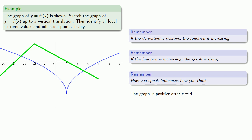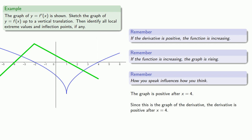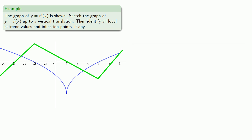In this last segment the graph is positive, and again since this is a graph of the derivative, the derivative is positive. So the graph of y equals f of x will be rising after x equals 4.